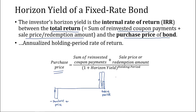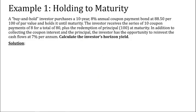We'll look at two scenarios for calculating horizon yield. One is the horizon yield if we hold the bond until maturity. In scenario two, we'll calculate the horizon yield if we sell the bond prior to maturity. In example one, we have a buy-and-hold investor who purchased a 10-year 8% annual coupon payment bond at 88.50 per 100 of par value and holds it until maturity. The investor receives 10 coupon payments of $8 for a total of $80 plus the redemption of principal $100 at maturity. The investor has the opportunity to reinvest the cash flows at 7% per annum. Calculate the investor's horizon yield.